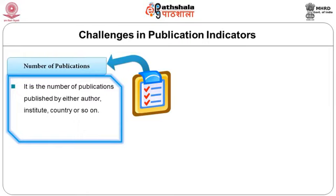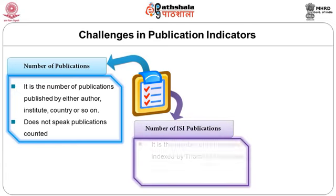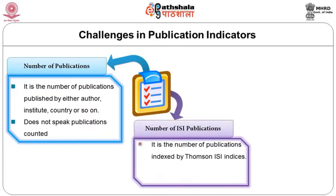Although this count is very straightforward and can be easily calculated by authors themselves, one must be very careful when using it to compare authors or research groups. The disadvantages of this indicator are that it does not take the size of the analyzed unit into account and does not speak to the impact of publications counted. The second indicator is the number of ISI publications — the number of publications indexed by Thomson ISI indices. Its disadvantages include not taking the size of the analyzed unit into account, having inherent problems of scope and coverage of ISI indices, and not counting non-ISI publications.